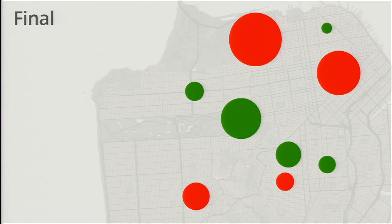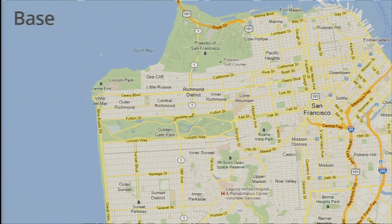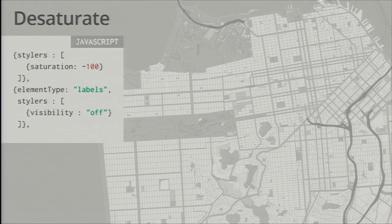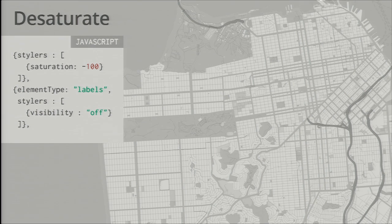We want something where the information really stands out prominently and the background information sinks back for context. Starting back with the base map, the obvious thing is to desaturate it completely and get rid of the labels. We have two styles: one with no element type and no feature type — applying to everything — desaturating by 100%; and a second restricted to only labels, turning them all off with visibility.